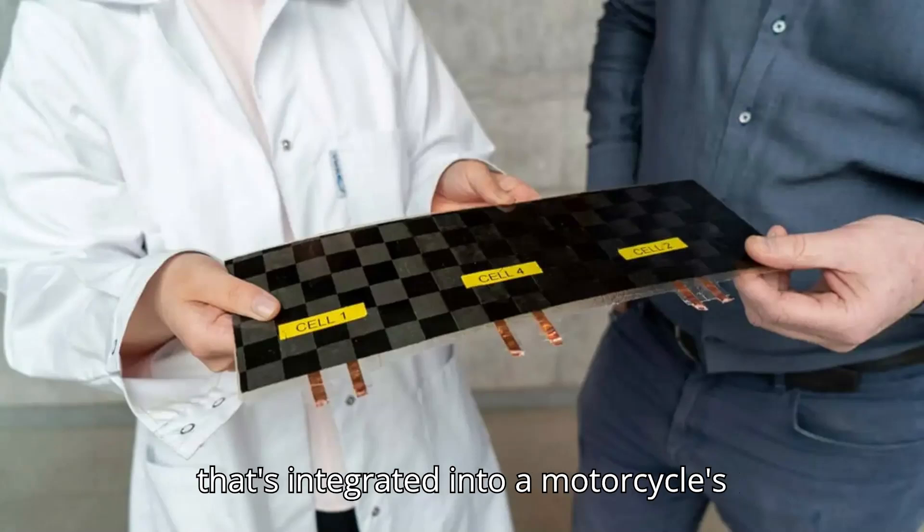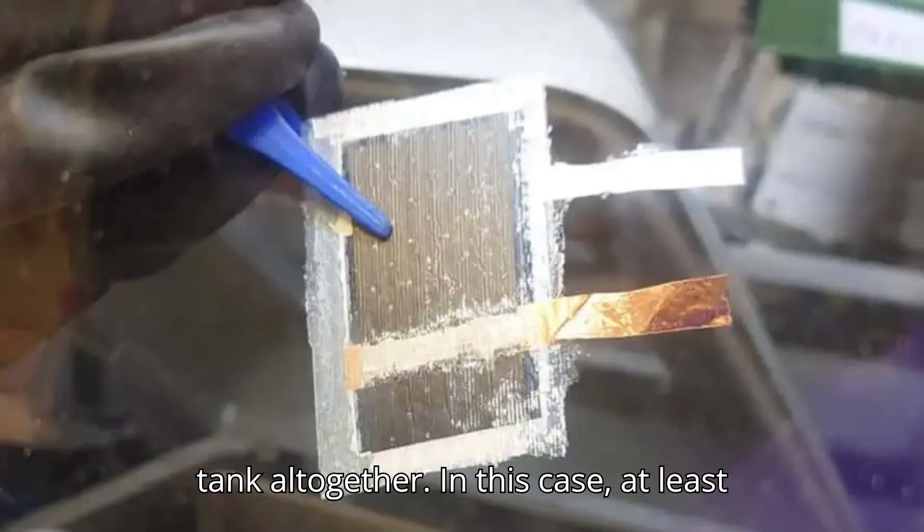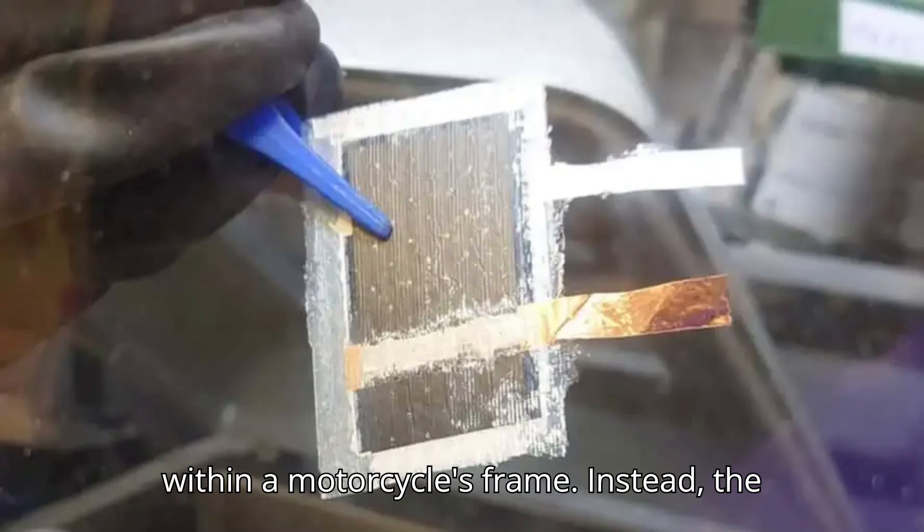Think of it as a fuel tank that's integrated into a motorcycle's frame rather than having a separate fuel tank altogether. In this case, at least in theory, you won't need a battery housed within a motorcycle's frame. Instead, the bike's frame is the battery. Pretty cool, right?